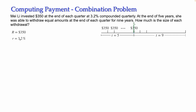The nominal rate of interest is 3.2%, and m, the number of compounding periods, is 4. This gives a periodic interest rate of 0.032 divided by 4, which is 0.008. Since the payments are at the end of each quarter and the conversion period is also quarterly, we have an ordinary simple annuity, so we will use the ordinary simple annuity formula.